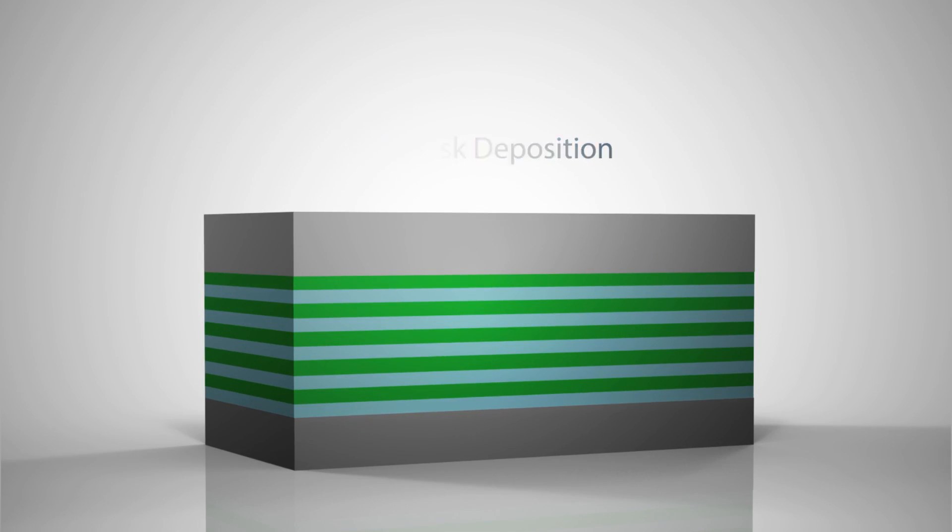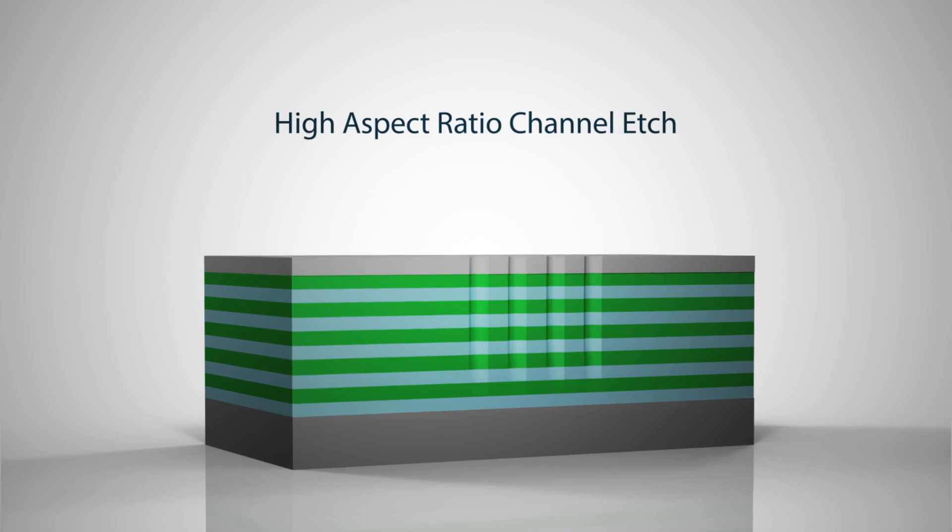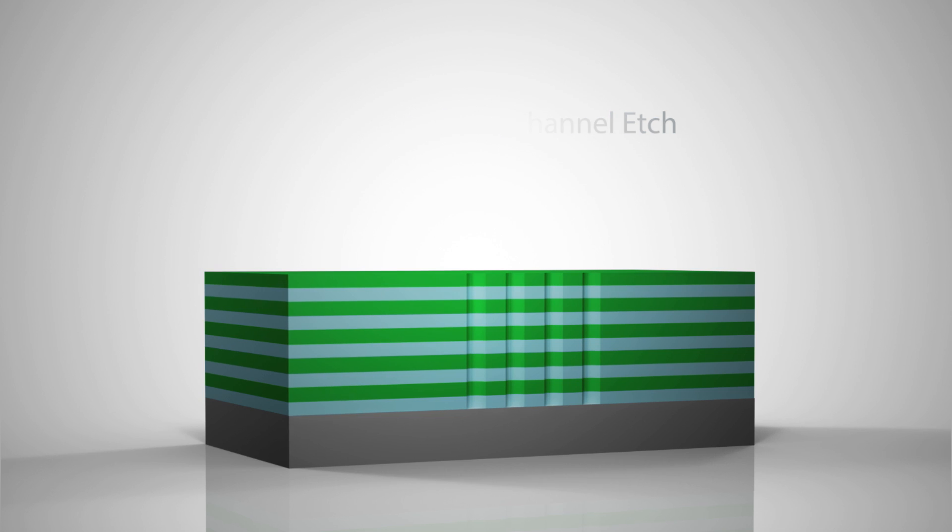a hard mask is deposited and openings are formed, followed by high aspect ratio etch through all the layers, which define the size and shape of the memory channel holes.